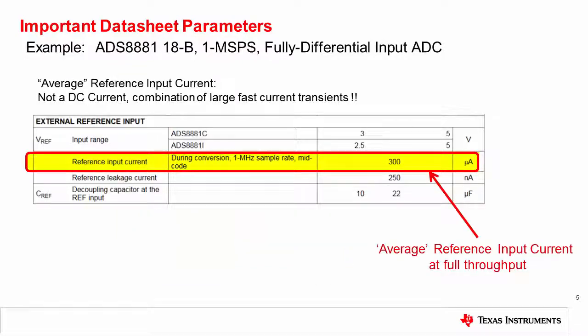Another useful datasheet parameter is the average reference input current. This parameter is typically specified at full throughput of the device. It is important to remember that this parameter is not a DC or static current, but rather a dynamic current. This current consumption represents the average of fast dynamic transient current spikes resulting from the switching of the binary weighted capacitive load at the reference input. The average reference input current consumption is useful to verify the accuracy of the reference input simulation model.